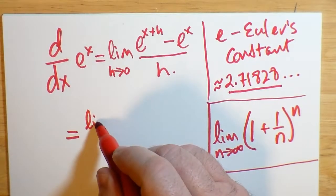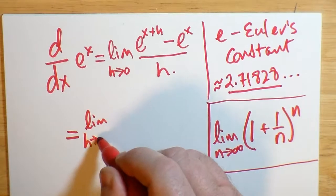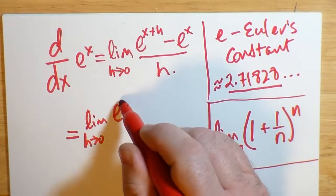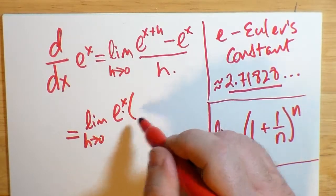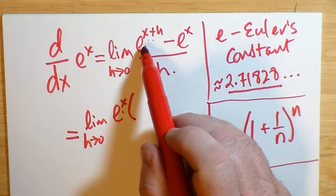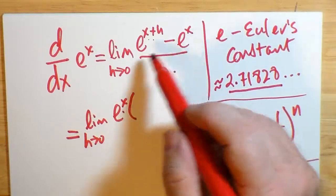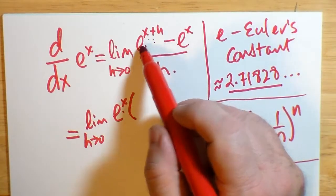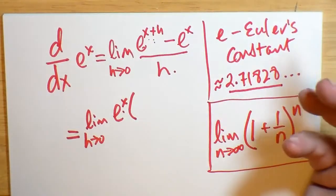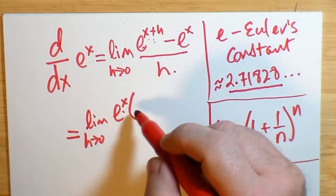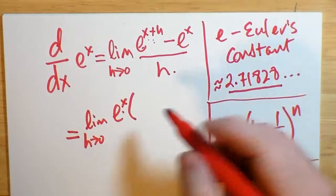And so we have the limit as h approaches 0 of e to the x factored out of, well, this is like e to the x times e to the h here. And we subtract, well, e to the x then is common. If that's e to the x times e to the h here, using the laws of exponents, then e to the x is common. And that's why we can factor out e to the x.